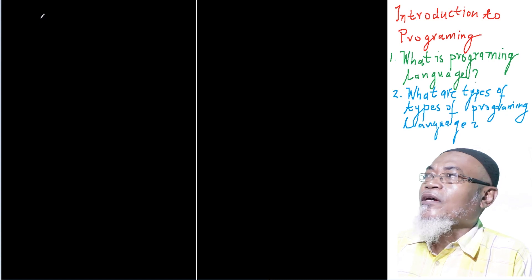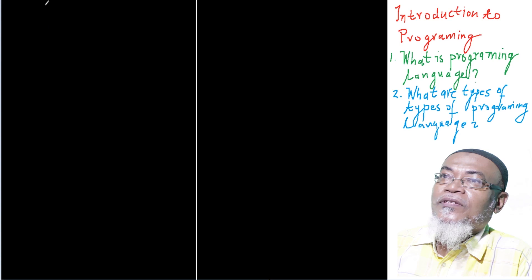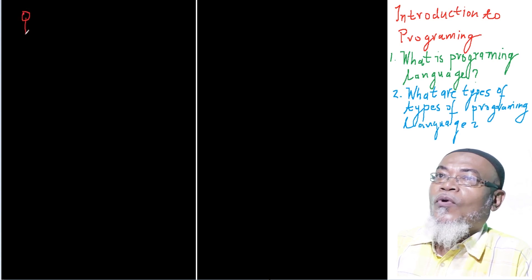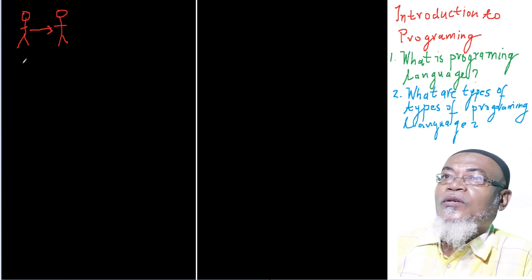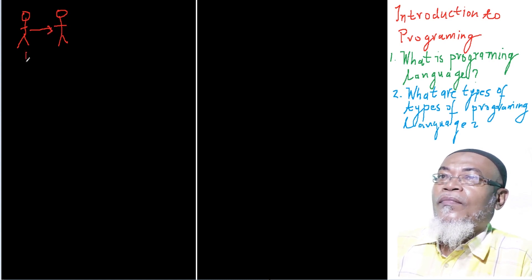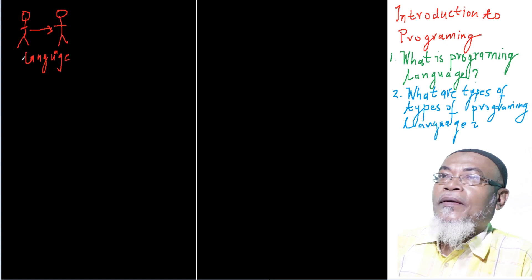So let's start and try to analogize and understand first of all what is language, instead of what is a programming language. Let's take a very simple scenario. If there are two people who want to communicate with each other, it is obvious that both of them must understand a particular language.